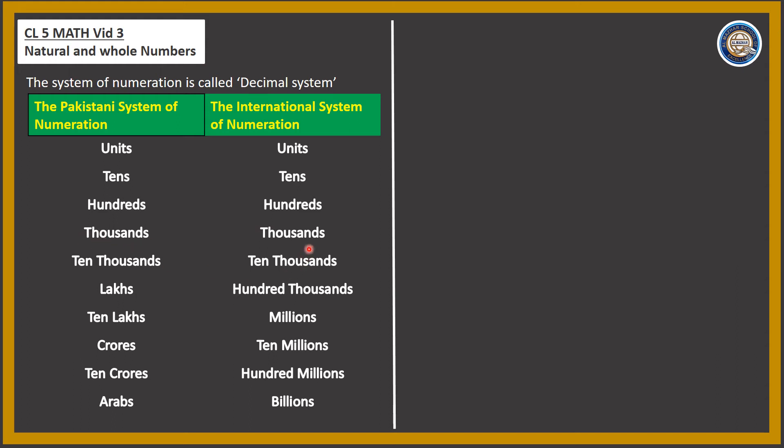Continuing up the scale: in the Pakistani system we have lakhs, ten lakhs. In the International system we have hundred thousands, millions, ten millions, and hundred millions.